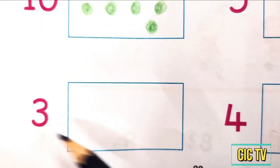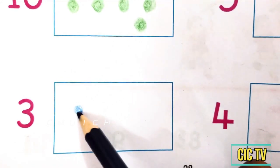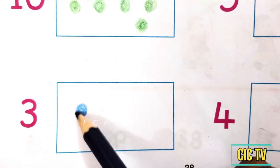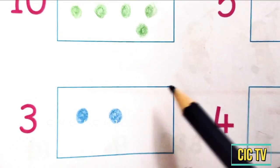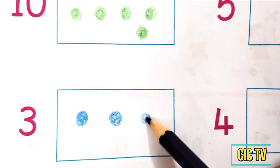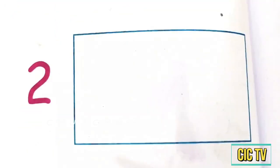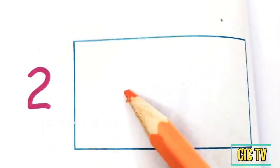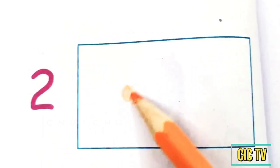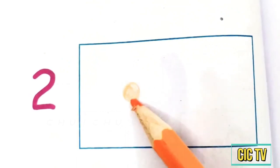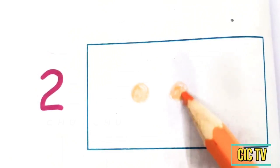Next: 3. We are going to draw 3 dots. 1, 2, 3. 3 dots. Next: 2. We are going to draw 2 dots. 1 and 2. 2 dots.